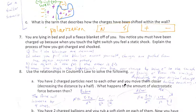Number seven, you're lying in bed and pull a fleece blanket off you. You notice you must have been charged up because when you touch the light switch, you feel static shock. Explain the process of how you got charged and shocked. Basically, what happens is you end up with an imbalance of charges because if you pull the blanket off yourself, the charges are pulled from one object to the other. We're assuming that we ended up with the negative charges, so some of the negatives were pulled off onto us, that would mean the blanket is positive overall.